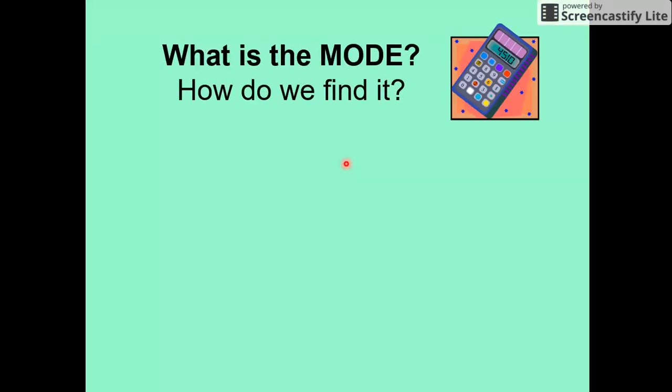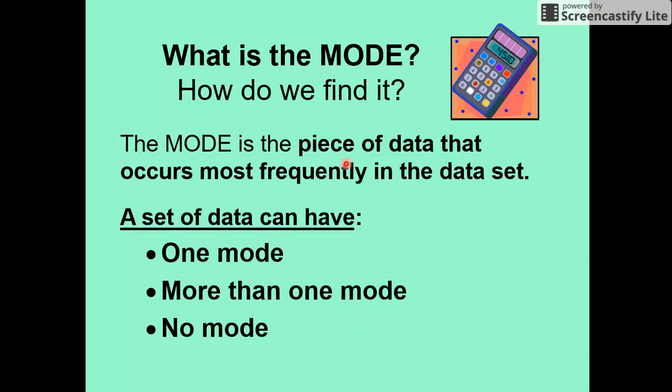Then we look at the mode. The mode I always think is another word for fashion. They also have other ideas of saying that it appears most often. The mode is the piece of data that occurs most frequently in the data set. You can have one mode, more than one mode, or you can have nothing—none of them appear more than once.